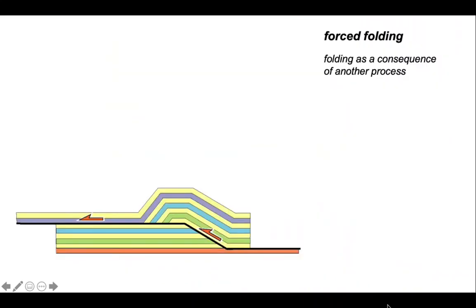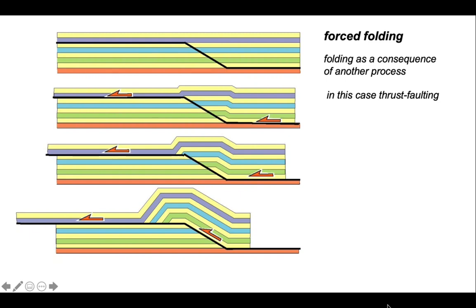Another set of folds are called forced. By that, it means that folding is a consequence of another non-buckling process. And here's an example of a fold that is created as a consequence of movements on a fault that has a particular shape. It's following a little staircase. Just to cartoon up how that works, this is the evolution of the structure. So the fault forms as this step and movement of the hanging wall block up the step has created a fold in the hanging wall. Not through buckling, but because of a consequence of displacement up the fault shape. It's a forced fold.